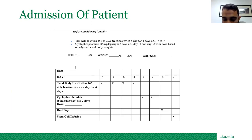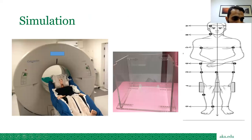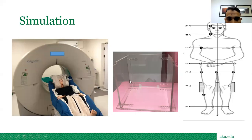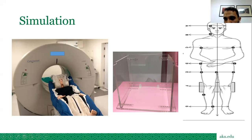On day five, the patient comes for simulation. For immobilization we use a vacuum lock bag. For tissue-deficit regions, we use rice bags as bolus. For the head and neck region, we also use rice bags placed in an adjustable jig according to the patient separation. Shown in the picture are the points on the patient where we perform in vivo dosimetry.